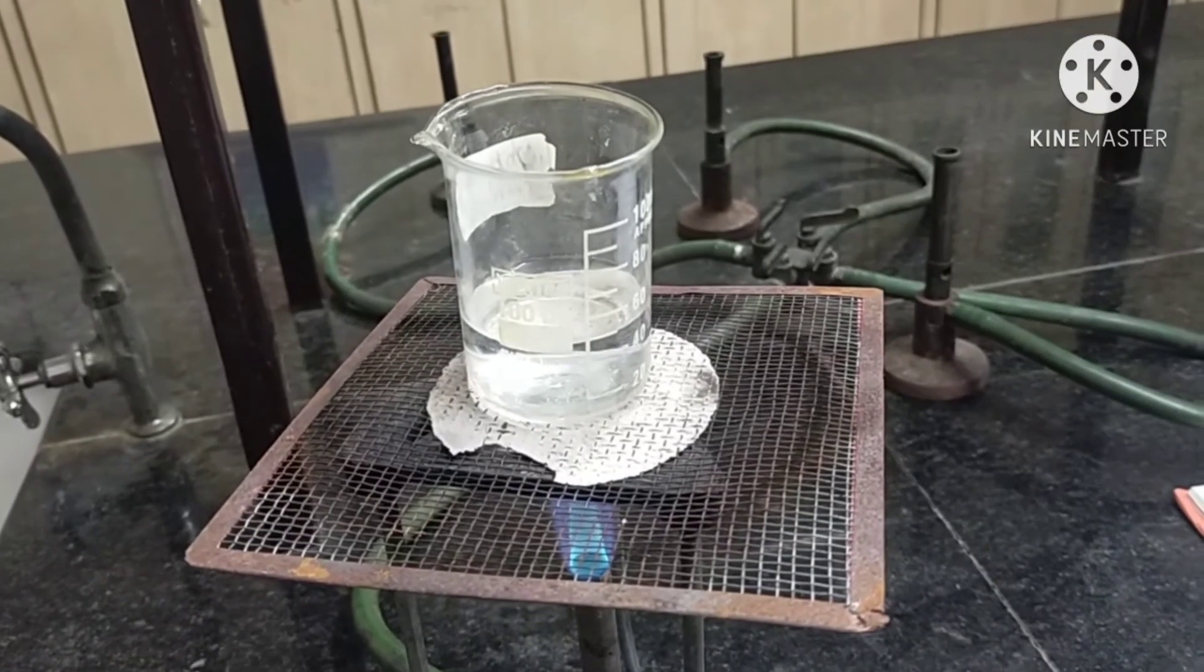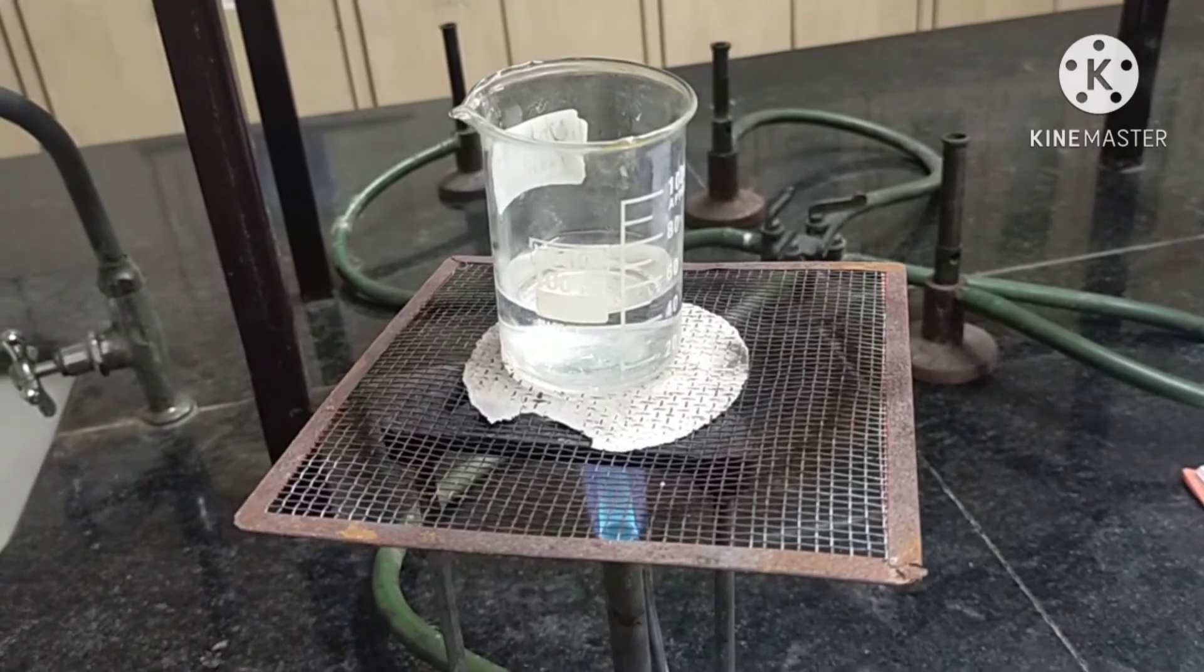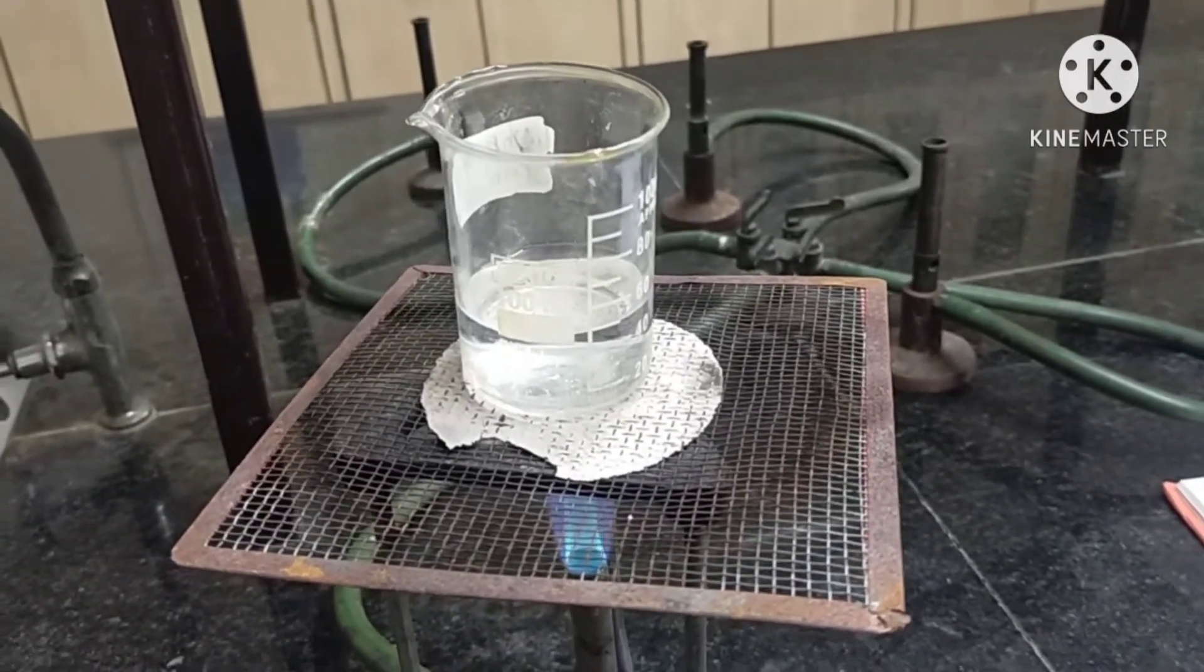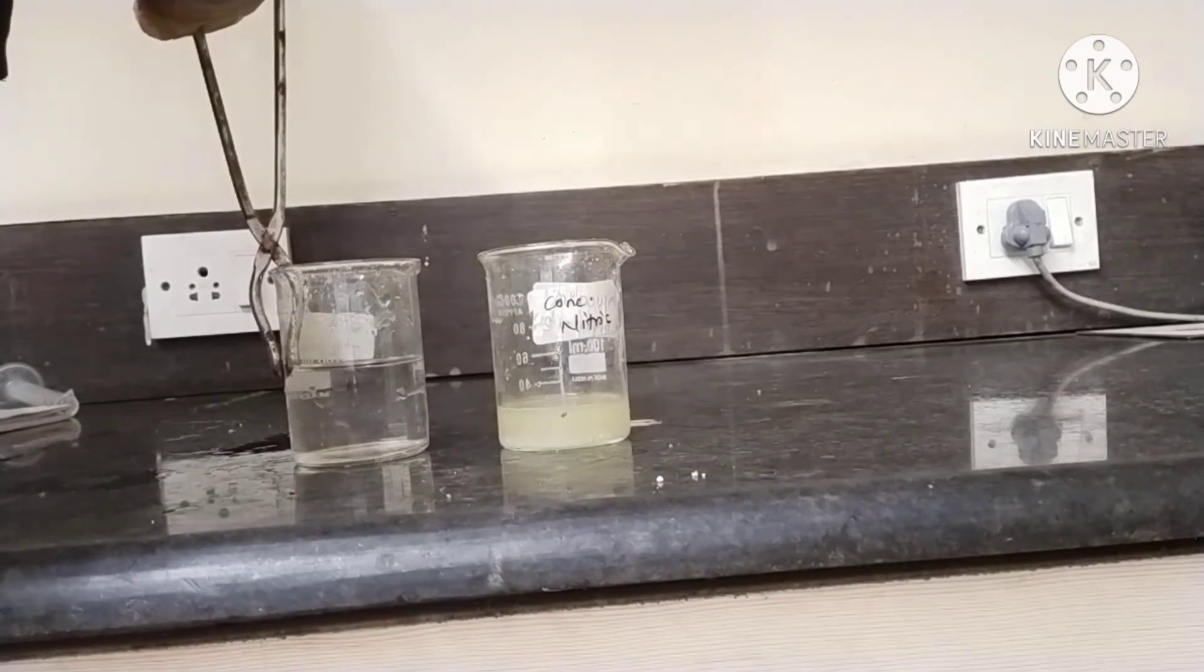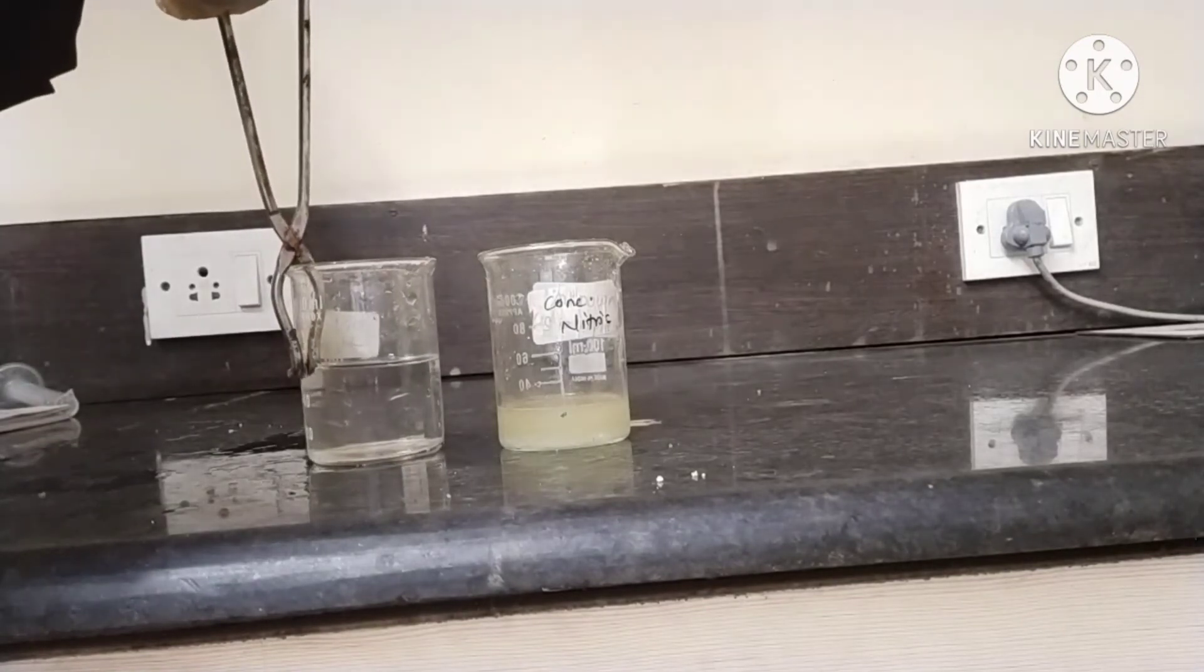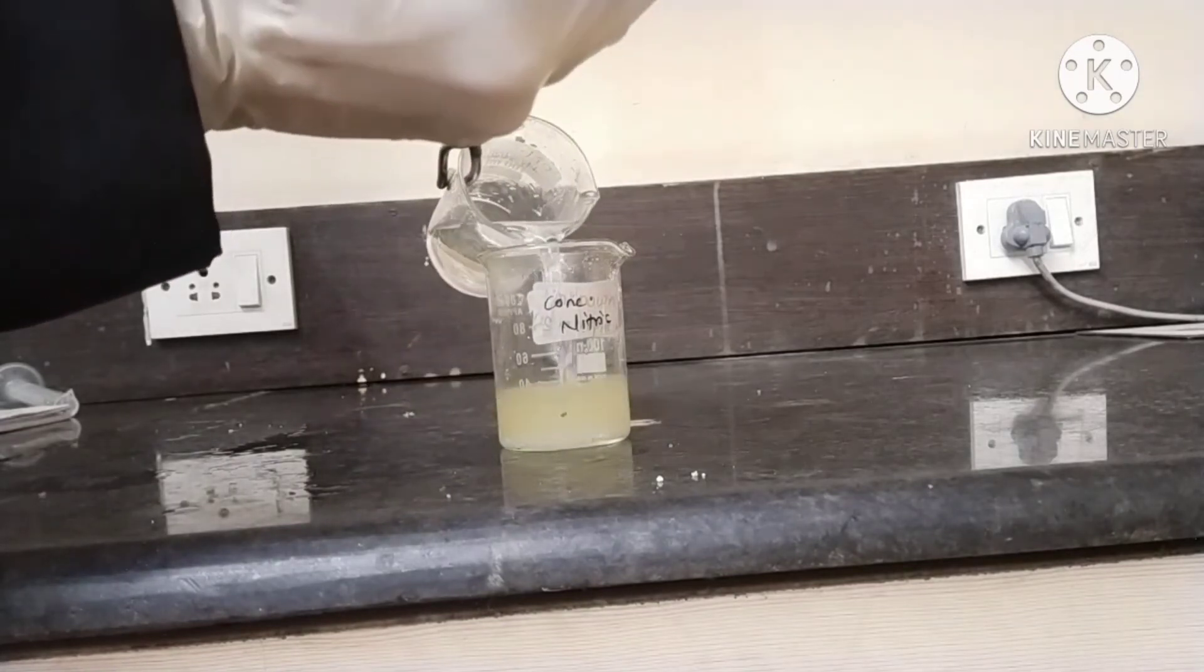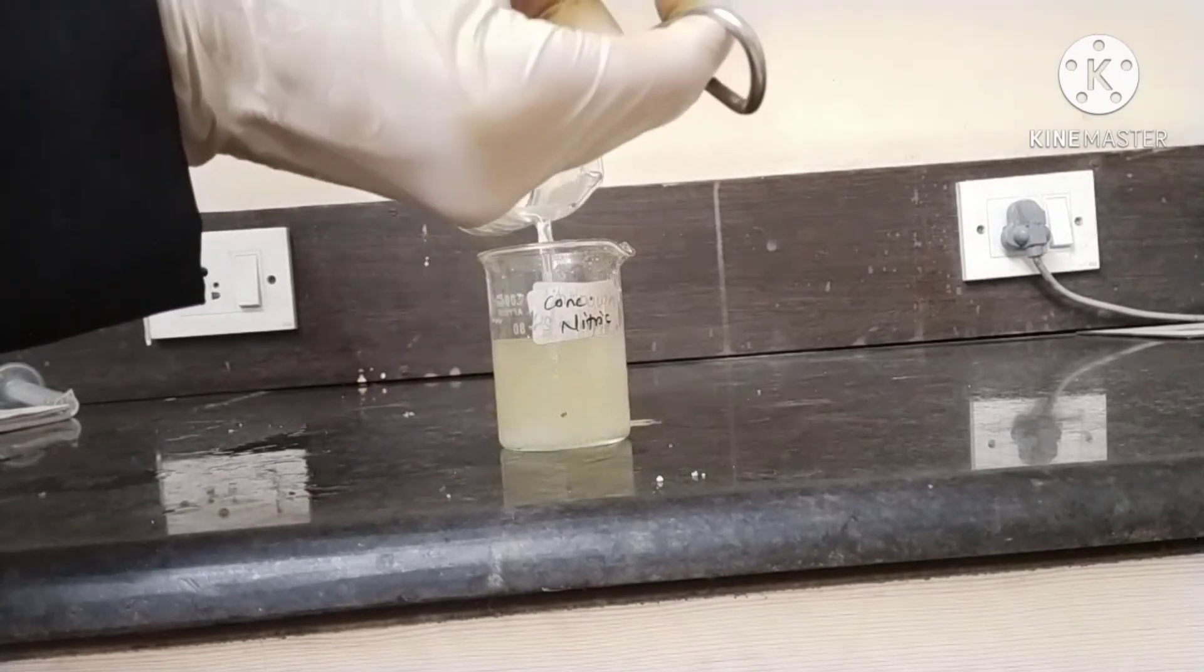Now after adding 20ml of distilled water, boil this solution for about 2-3 minutes over the burner. After heating this water, add the boiled water into the first beaker which contains both salts.